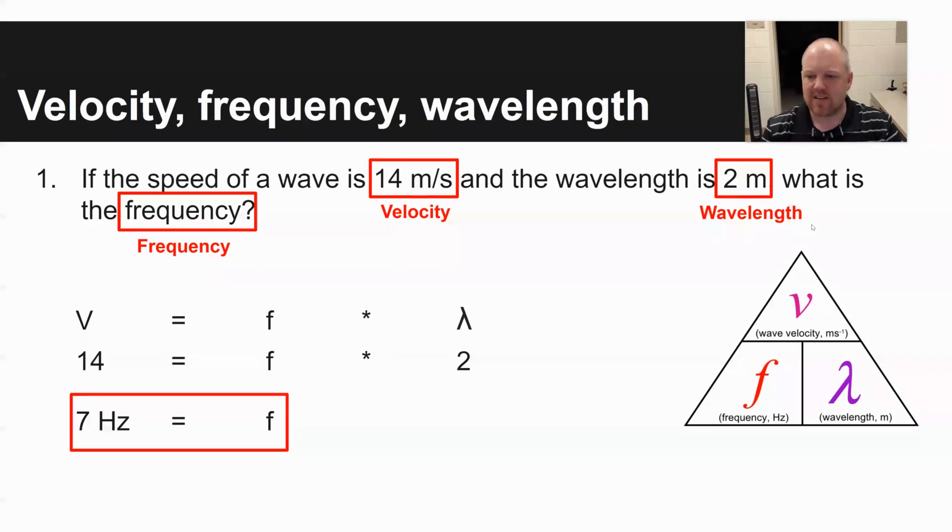V for velocity, F for frequency in hertz, and then wavelength in meters. And so V is equal to F times lambda, or 14 is equal to F times two. And then if you divide both sides of the equation by two, you get seven hertz is your frequency.